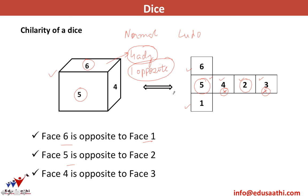Generally in questions, you are not given a normal dice, which means that they can interchange these numbers. They want you to think through: if I have a six here and a five here, then what face will be opposite to six? We'll do a few tips and tricks on solving such questions.